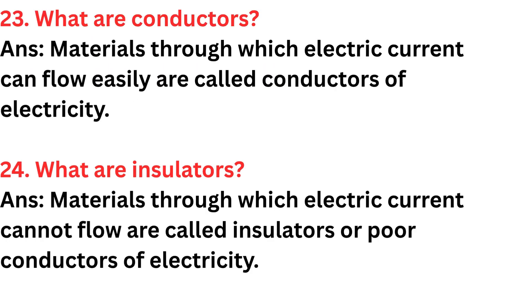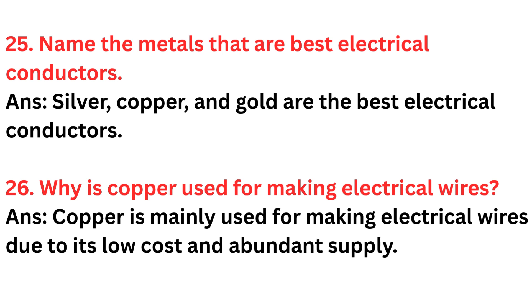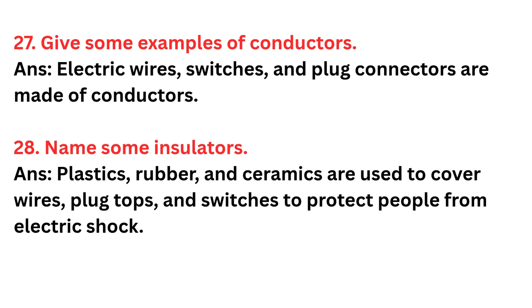Question twenty-three: What are conductors? Answer: Materials through which electric current can flow easily are called conductors of electricity. Question twenty-four: What are insulators? Answer: Materials through which electric current cannot flow are called insulators or poor conductors of electricity. Question twenty-five: Name the metals that are best electrical conductors. Answer: Silver, copper, and gold are the best electrical conductors. Question twenty-six: Why is copper used for making electrical wires? Answer: Copper is mainly used due to its low cost and abundant supply. Question twenty-seven: Give some examples of conductors. Answer: Electric wires, switches, and plug connectors are made up of conductors. Question twenty-eight: Name some insulators. Answer: Plastic, rubber, and ceramics are used to cover wires, plug tops, and switches to protect people from electric shock.